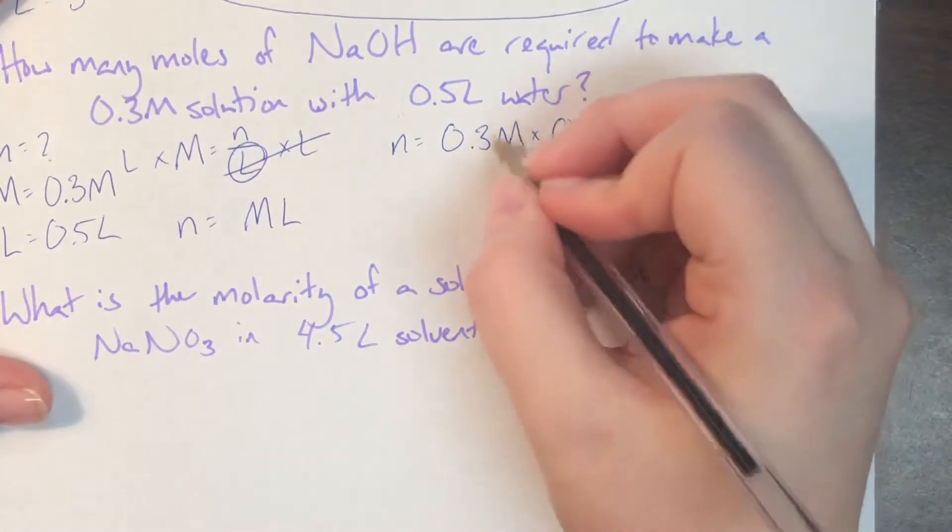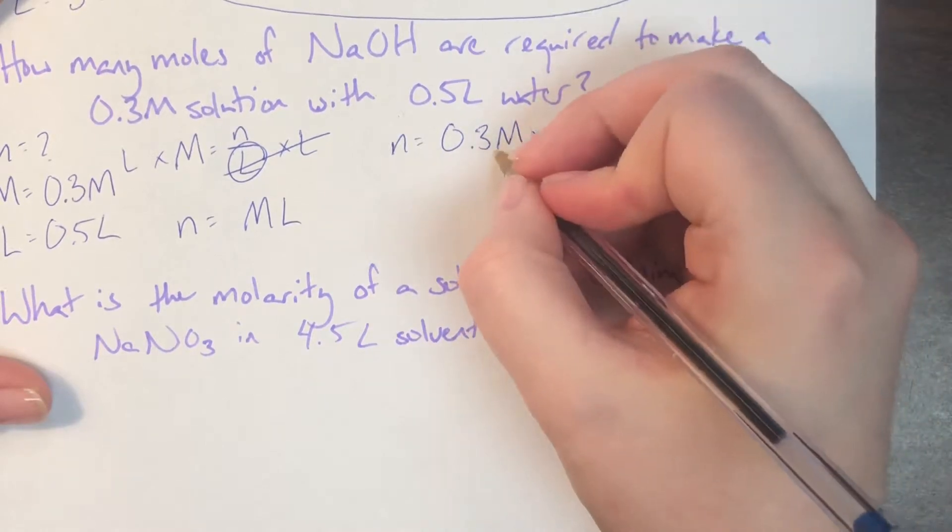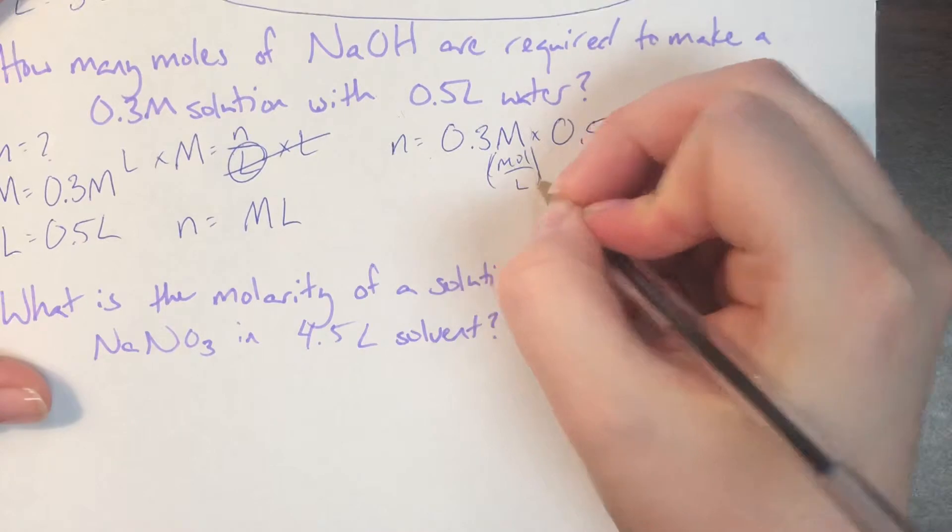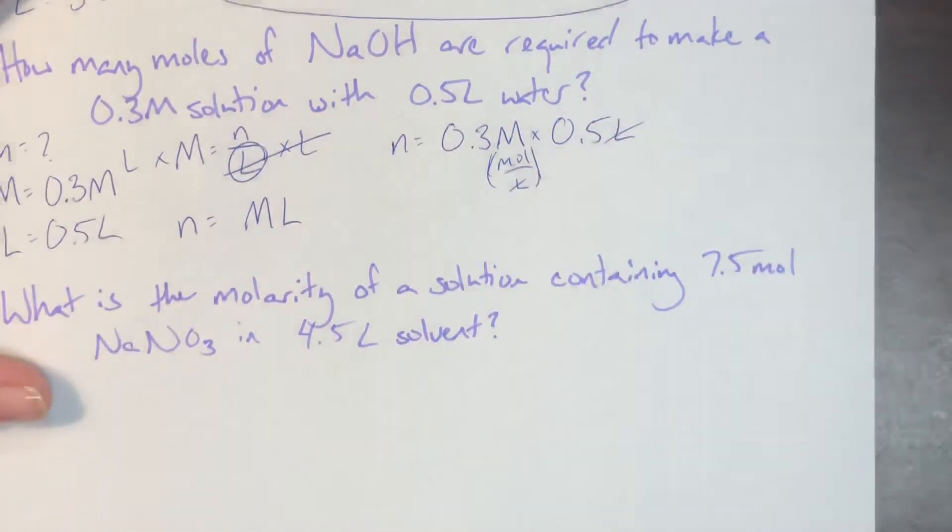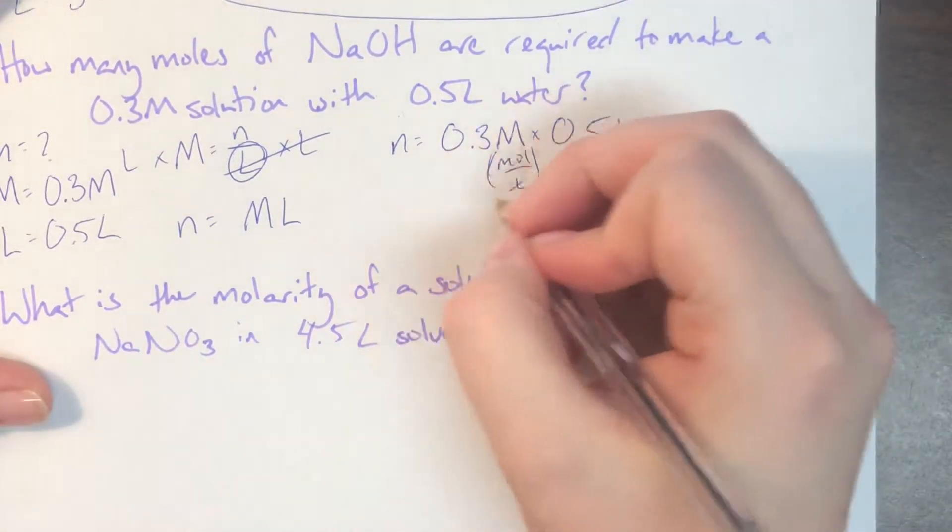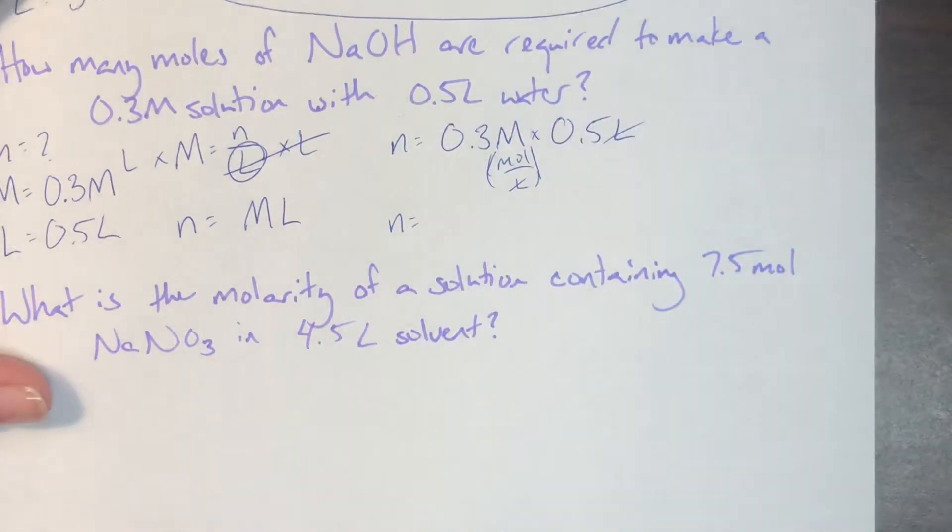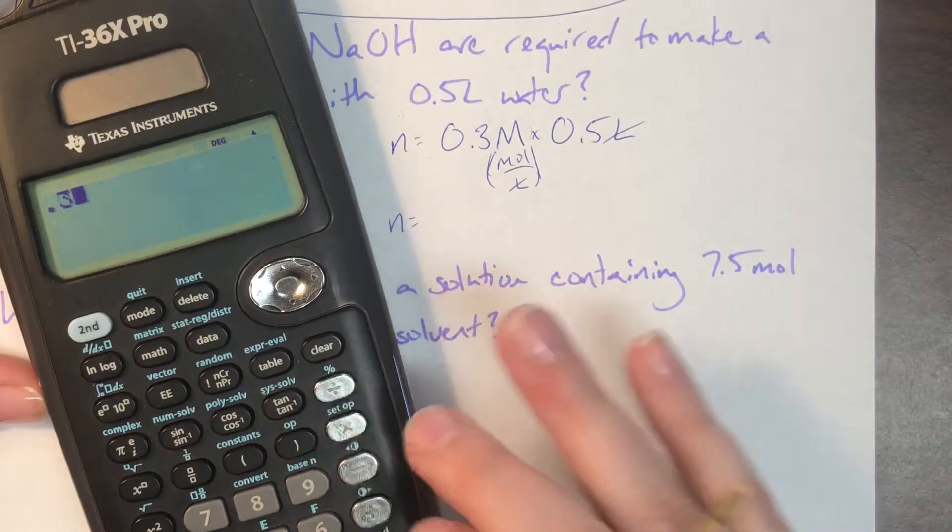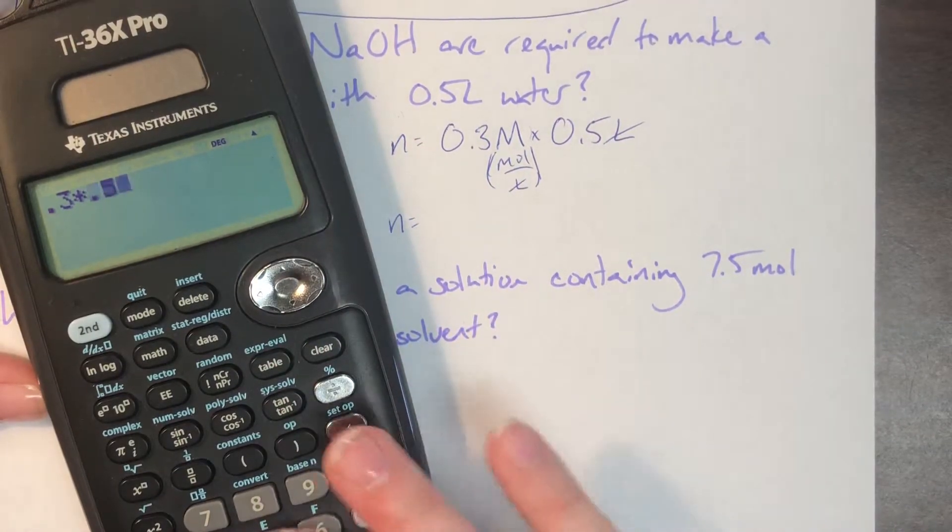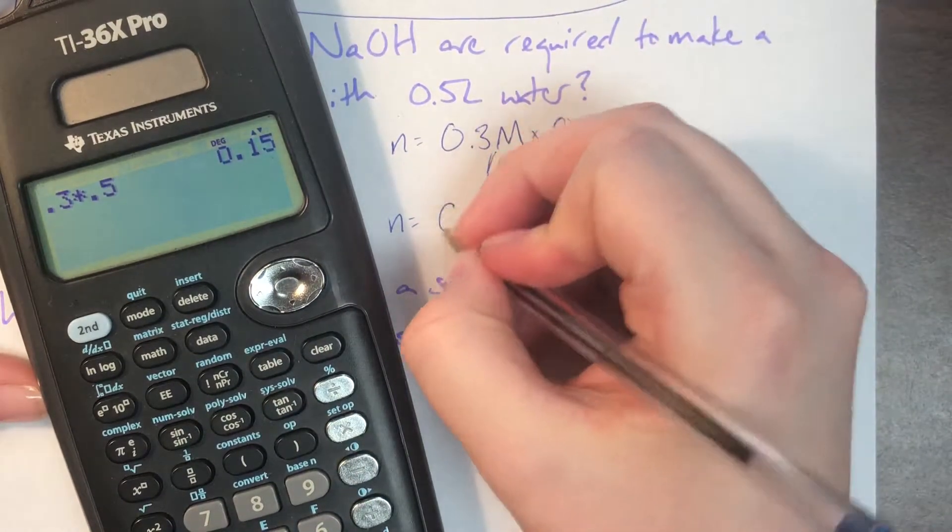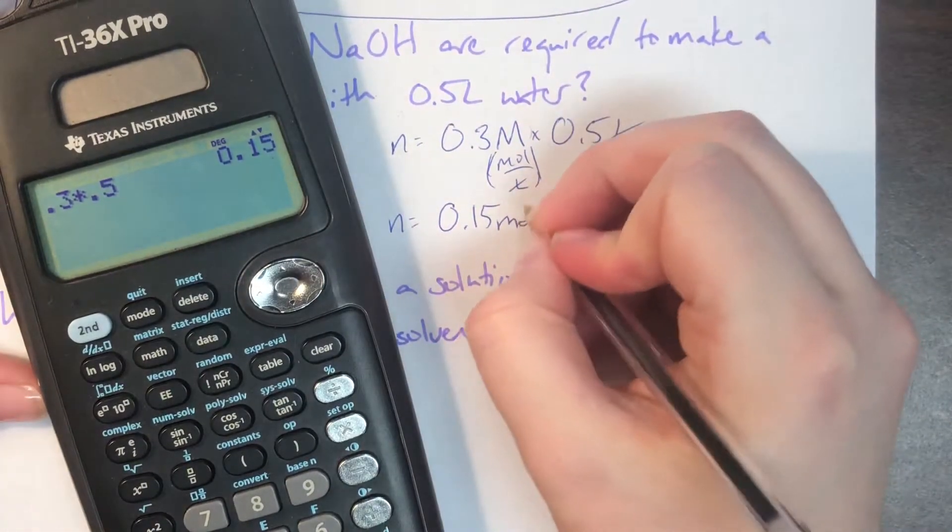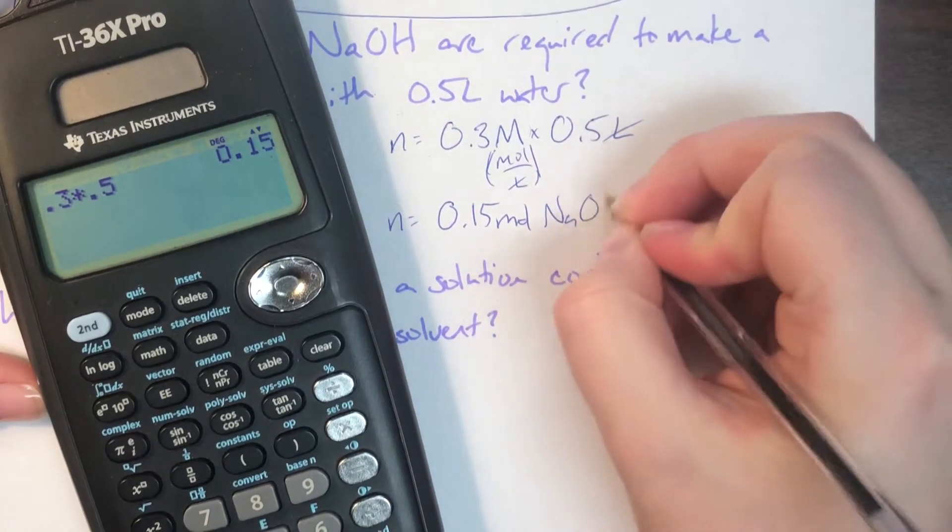Remember that molarity, or molar, is secretly moles per liter, which means that liters will actually cancel, leaving me with a unit of moles. So it does look like I isolated this properly. So 0.3 times 0.5 gives me 0.15, and that is moles, and then I know that this is of sodium hydroxide.